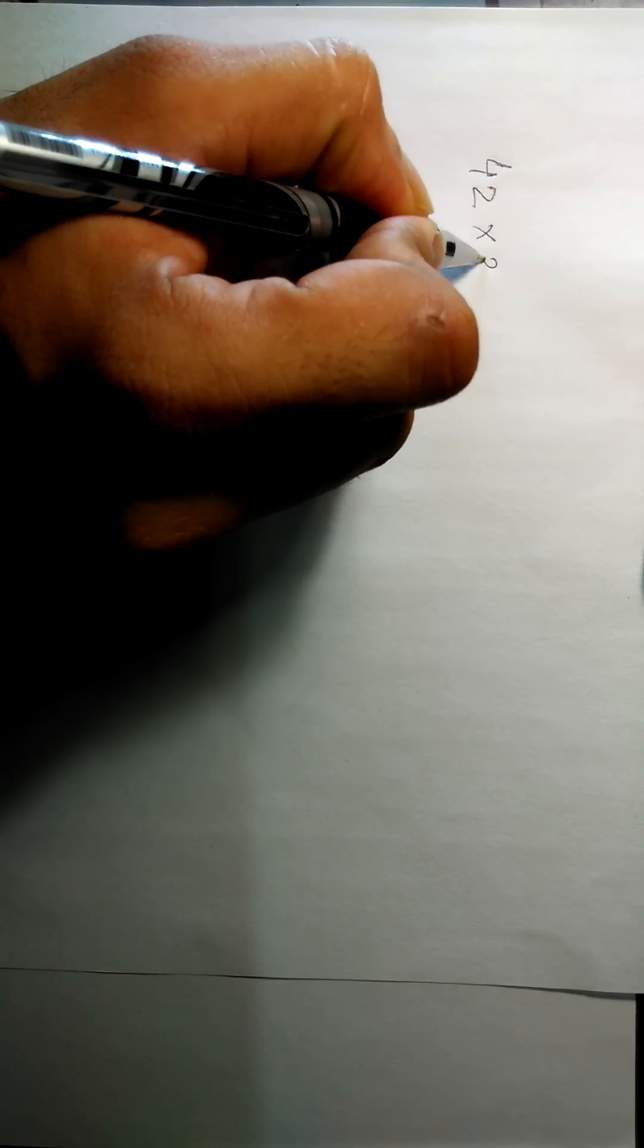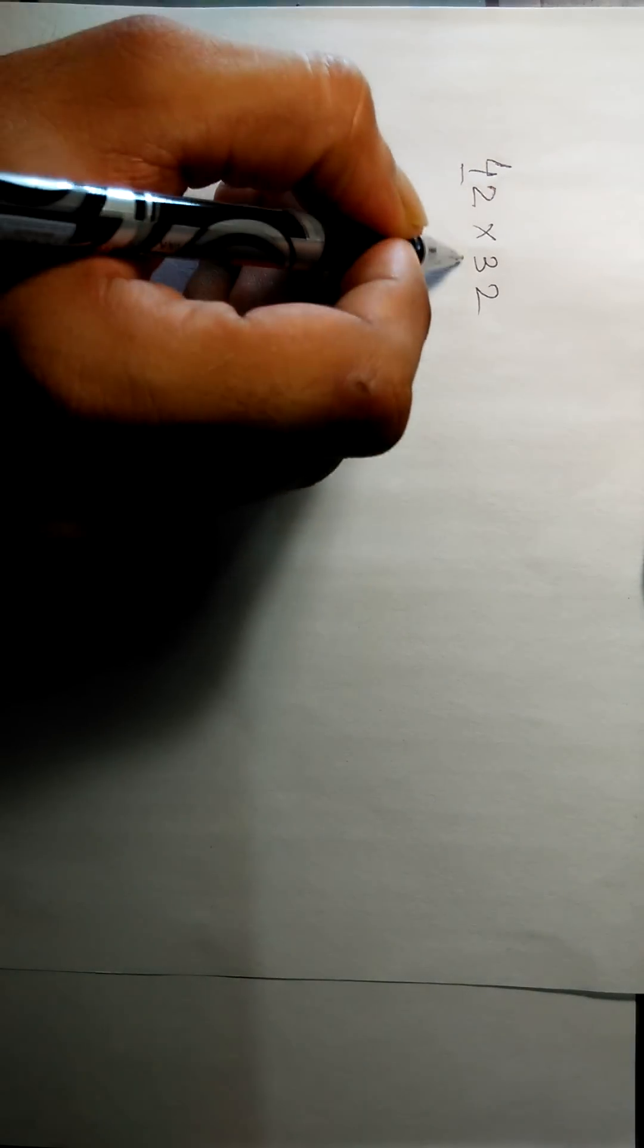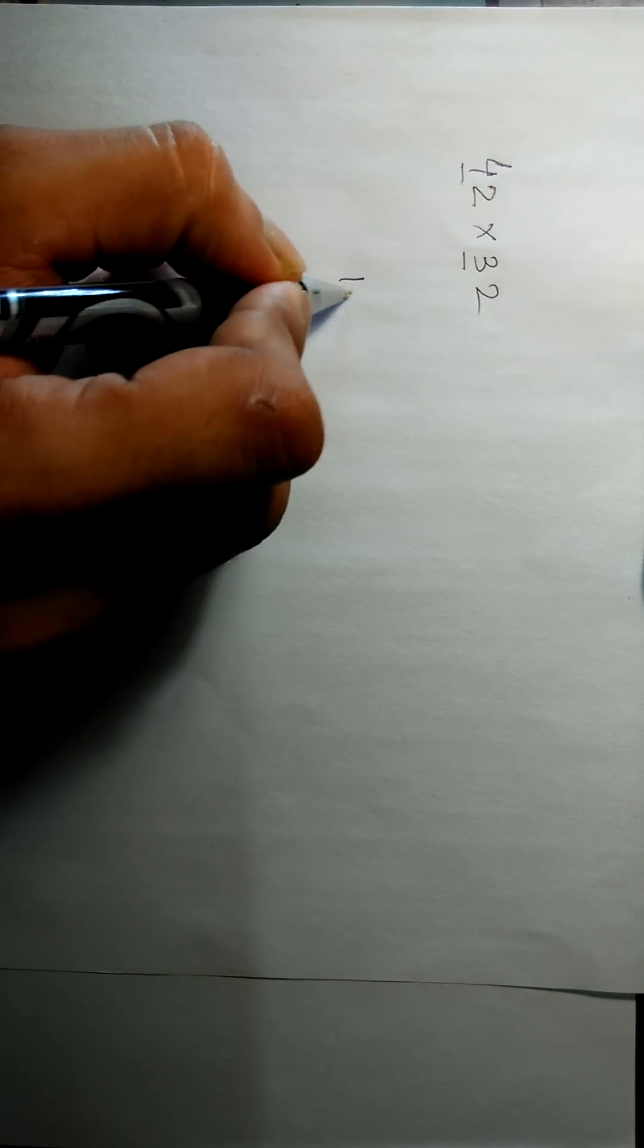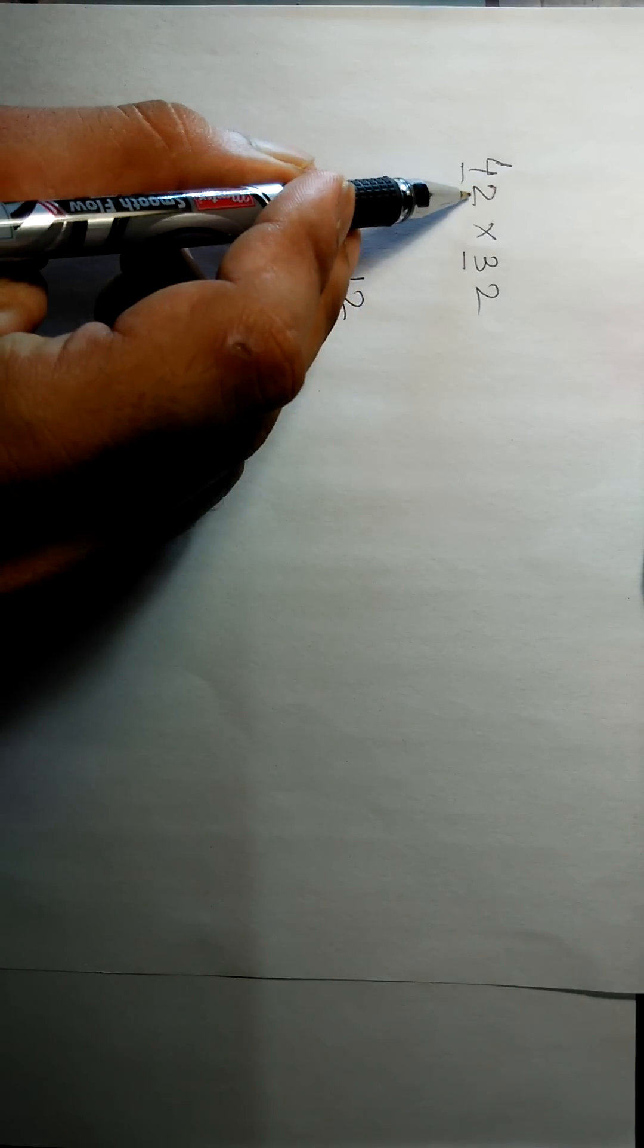Hey guys, welcome to Exam Tricks. Today we're going to learn the multiplication of two-digit numbers like 42 into 32 easily. First we have to multiply 4 and 3, that becomes 12, and 2 into 2, that is 4.